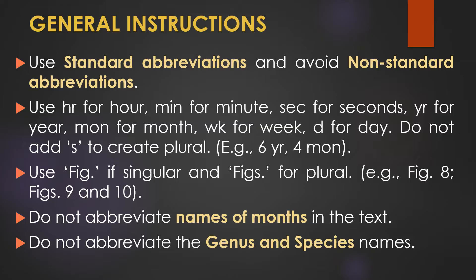Use standard abbreviations and avoid non-standard abbreviations when writing chapters. For example, use hr for hour, min for minute, sec for second, yr for year, mon for month, wk for week, and d for day. Do not add 's' to create the plural — for example, use 'six year' not 'six yrs', and 'four month' not 'four mons'. For figures, use 'Fig.' if singular and 'Figs.' for plural.